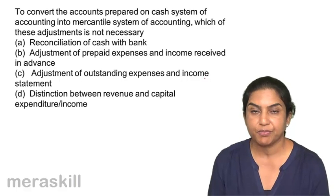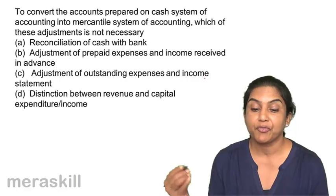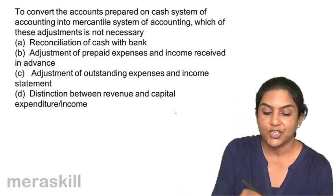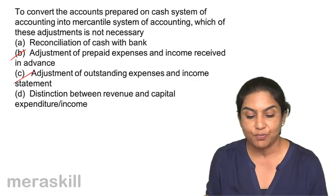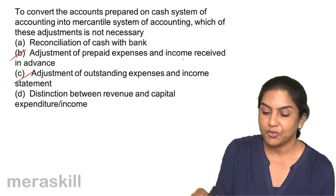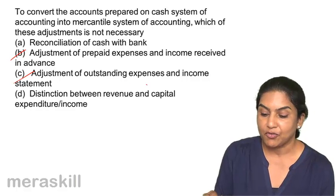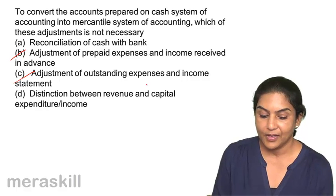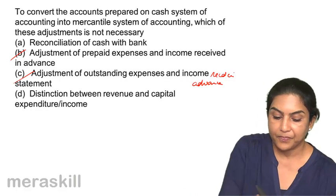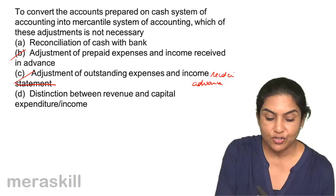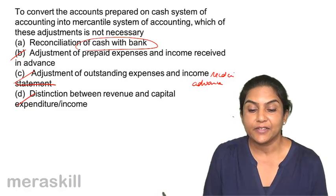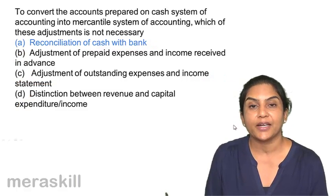Converting from cash system means you record when cash is received and don't follow the accrual system. To convert to the mercantile system, we must make adjustments for prepaid expenses, income received in advance, outstanding expenses, and the distinction between revenue and capital. However, reconciliation of cash with bank is not necessary in order to convert from cash system to mercantile system. Correct answer, option A.